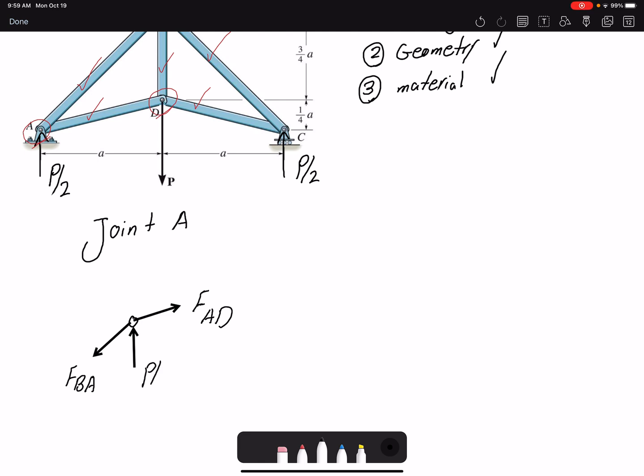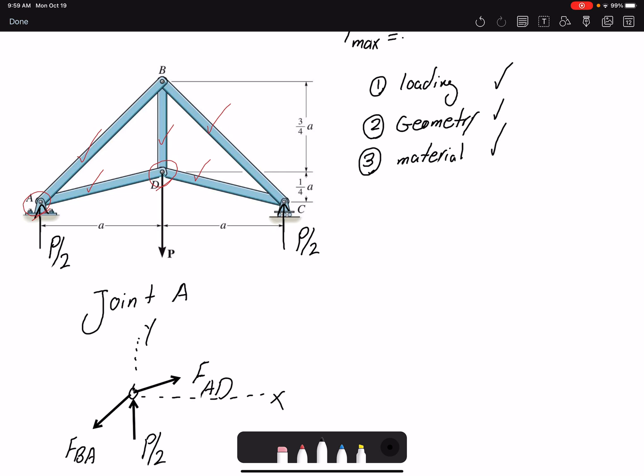That would be the free body diagram of our forces. I'm going to use typical X and Y coordinates. I need to find the dimensions. Here is A, and if we add these two, it would be A. So we are dealing with one, one, square root of two triangle here. And here we have A and one-fourth of an A. So we are dealing with one, four, square root of 17 triangle for these two members.